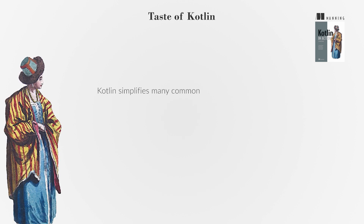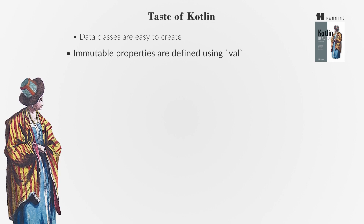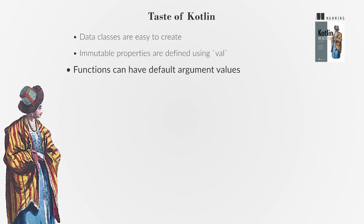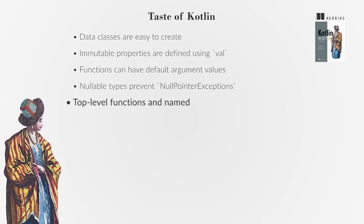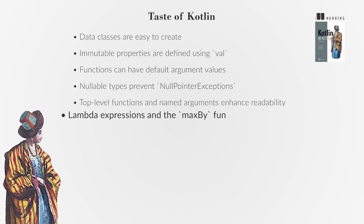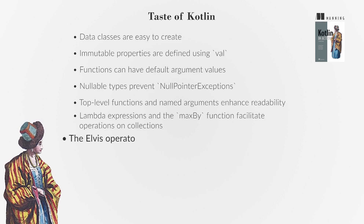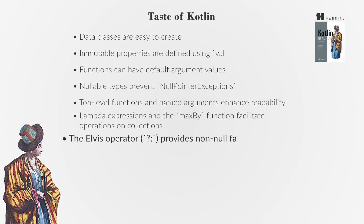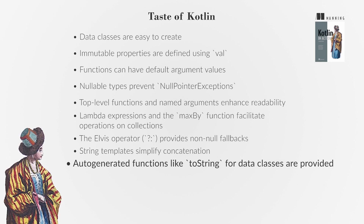Kotlin simplifies many common programming tasks. Data classes are easy to create. Immutable properties are defined using val. Functions can have default argument values. Nullable types prevent null-pointer exceptions. Top-level functions and named arguments enhance readability. Lambda expressions and the max-by function facilitate operations on collections. The Elvis operator (question mark colon) provides non-null fallbacks. String templates simplify concatenation. Auto-generated functions like toString for data classes are provided.